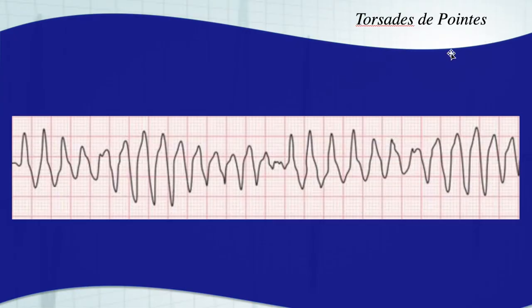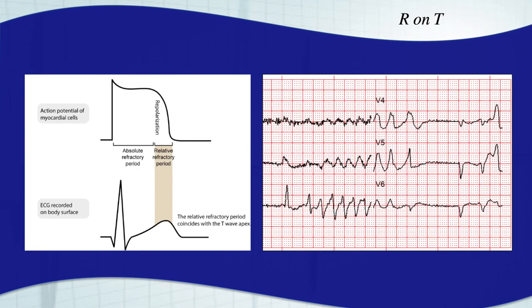It's torsades. Torsades de pointes — turning of the points — that bow tie configuration. It's hard to discern the bow tie configuration on a 12-lead; it's much easier on a long lead. It's also hard to catch because it's typically a transient rhythm — it comes and goes almost always. It's paroxysmal in nature. So we're going to talk about torsades a little bit deeper and why it's important to be able to discern torsades versus a normal QT or non-prolonged QT polymorphic VTAC, which is completely different.